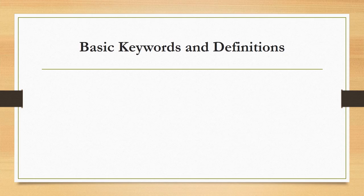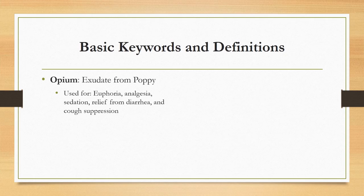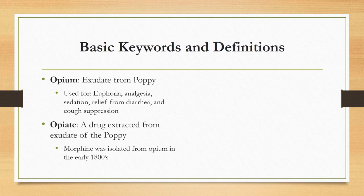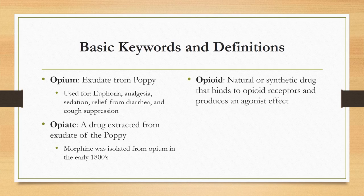We are first going to go over some basic keywords and definitions. The term opium refers to the exudate found from poppy flowers — some of opium's original uses include euphoria, analgesia, sedation, relief from diarrhea, and cough suppression. An opiate is a drug that has been extracted from the exudate of the poppy; morphine, isolated in the early 1800s, is the prototype opiate. An opioid can be a natural or synthetic drug that binds to opioid receptors to produce an agonist effect — morphine is a natural opioid, whereas fentanyl is synthetic.